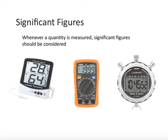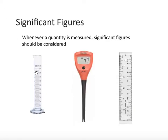When do we have to consider significant digits or significant figures? We need to consider significant figures when we make a measurement — when something is being measured. For example, measuring temperature, measuring voltage or current with a multimeter, measuring time, measuring volume of a liquid, measuring pH, or measuring a unit of length. For all of these measurements, we would need to consider significant figures.